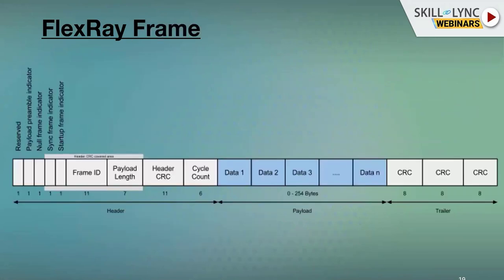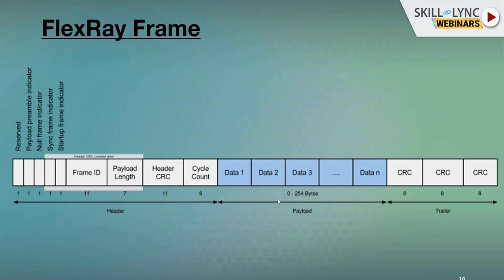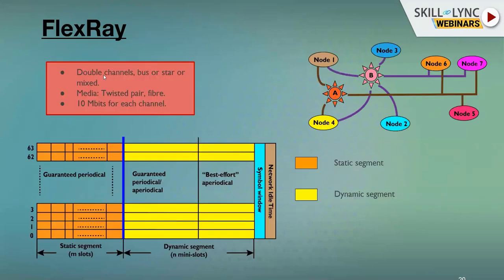The FlexRay frame is very complex because it has more features — both time-triggered and event-triggered. The frame includes the main frame ID, payload length (payload simply means the data content), and header CRC, which is calculated over the header data. There is also a cycle count indicating how many times that data will be sent, and a CRC for each data block.